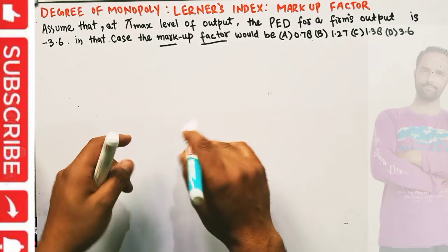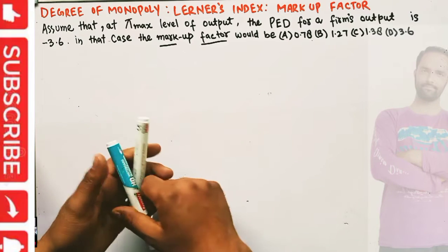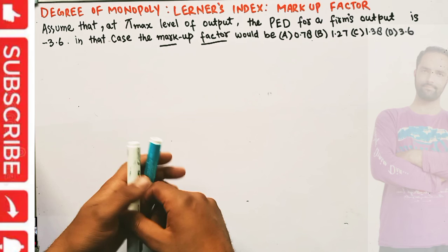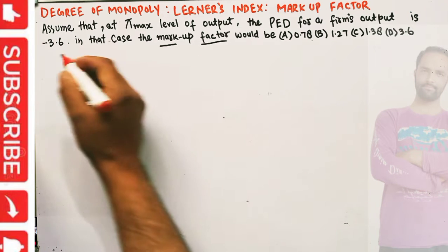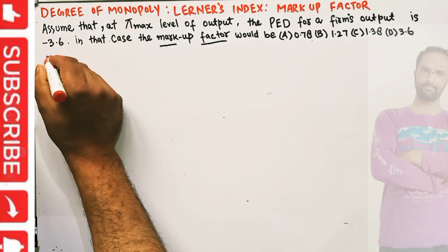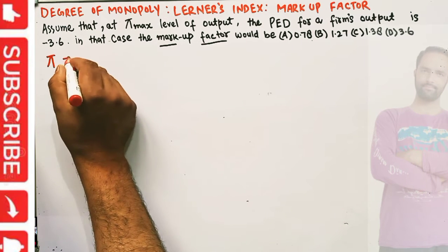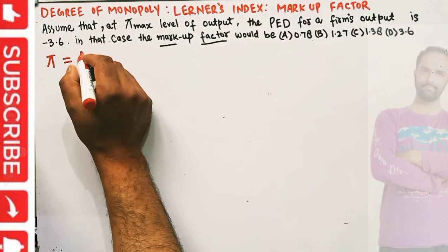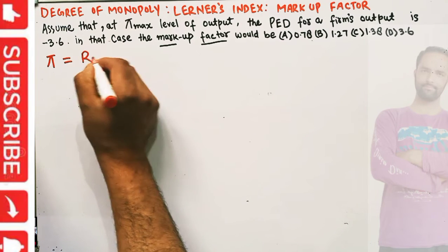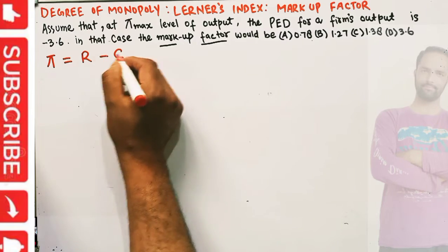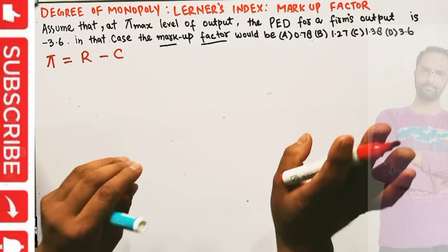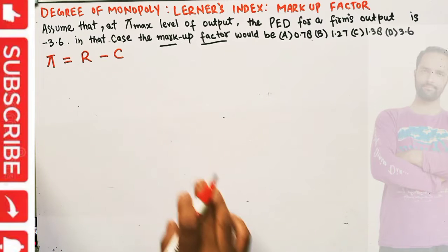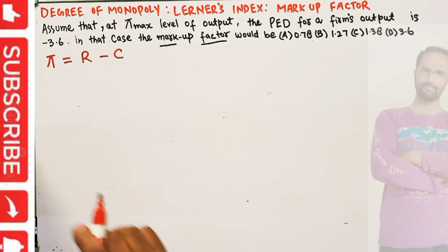Let's derive the Lerner's Index. We know that profit is simply equal to total revenue minus total cost. This is the profit function — when we subtract cost from total revenue, we get the profit.